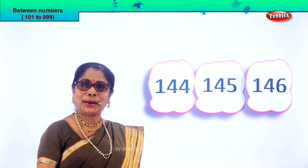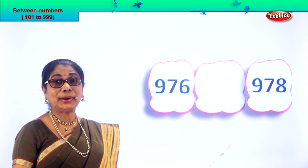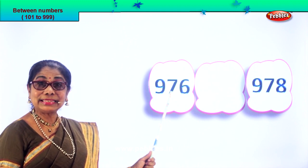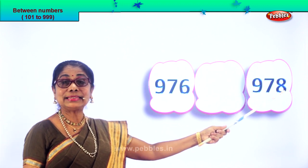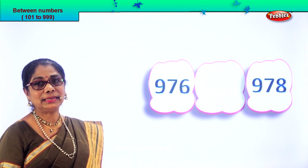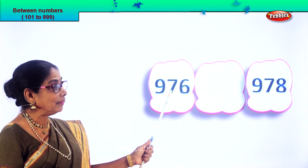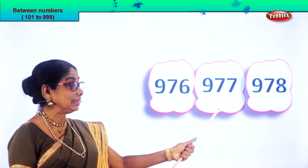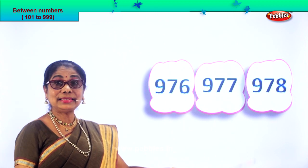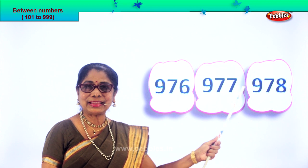Shall we take another set of numbers and guess the number between the two numbers? Read the number aloud — then you will not make a mistake. 976. After 6 comes 7, after 76 comes 77. So the numbers are 976, 977, 978. The number between is 977. Now read all three numbers: 976, 977, 978.